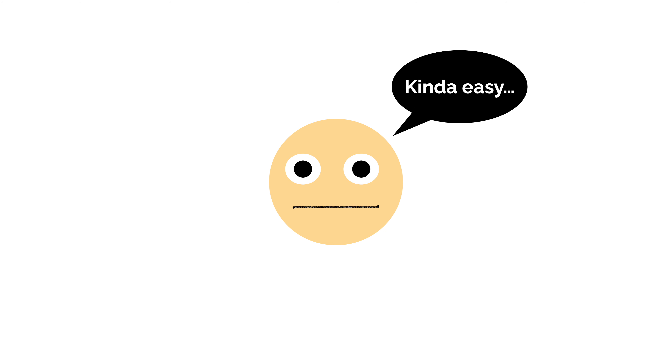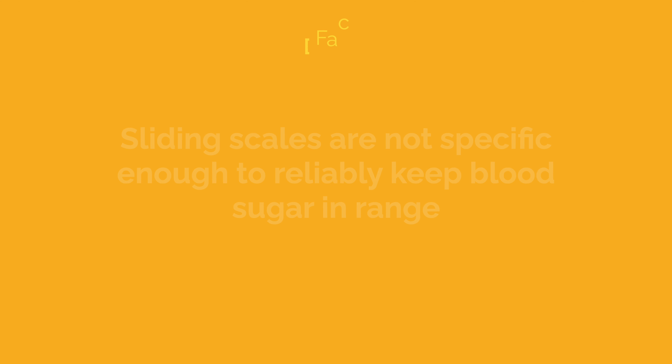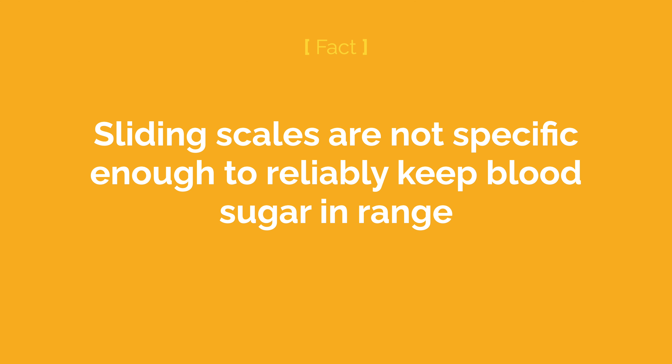Now, this system may seem very straightforward and simple compared to what you may be used to doing, and if you've had Type 1 diabetes for a long time, then you're probably rarely, if ever, using a sliding scale. The main reason that they aren't used commonly is because they are simply not specific enough to reliably keep your blood sugar in range.